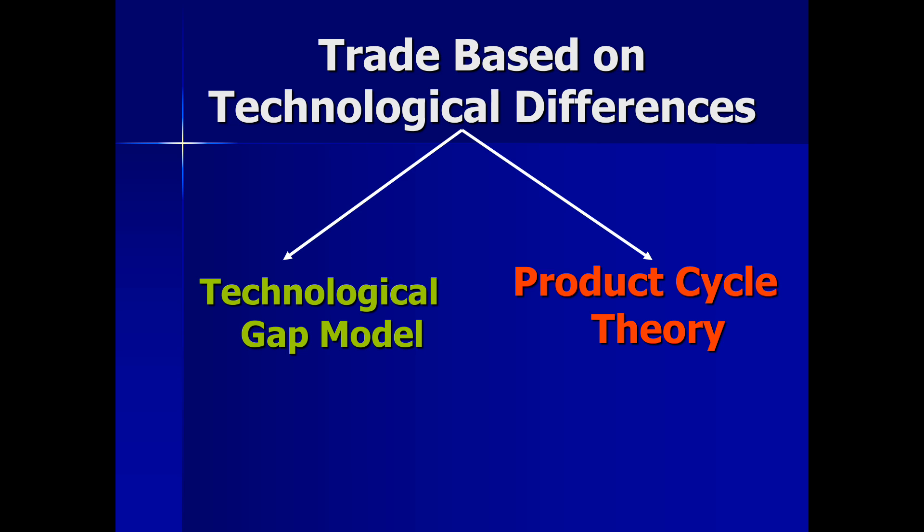One is the technological gap model, sometimes also called the imitation lag hypothesis, by Michael V. Posner. The other is the product cycle theory of Raymond Vernon. Both theories relax the Heckscher-Ohlin assumption that same technology is available everywhere, and both argue that there is a delay in the diffusion or transmission of technology across countries.